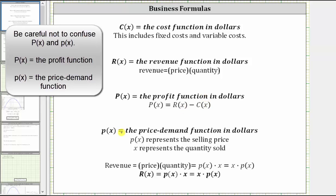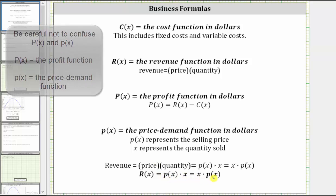We are given the price demand function, where little p of x represents the selling price. Because revenue is equal to price times quantity, we can determine the revenue function using the price demand function and then multiplying by x, where x represents the quantity sold. So the revenue function is equal to the price demand function times x.